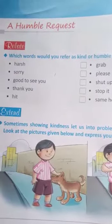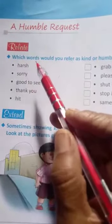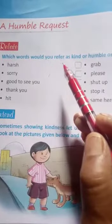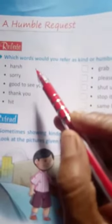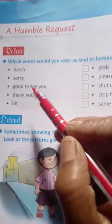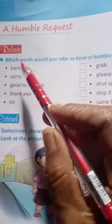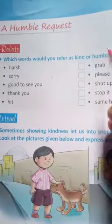Before seeing the poem, you see these questions. Which word would you refer as kind or humble ones? Tick them. There are some words. You have to see these words carefully — it is your task. You read the words and search the meaning of these words, and according to the questions, which words would you refer as kind or humble?